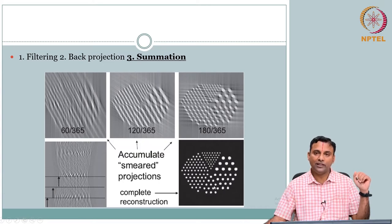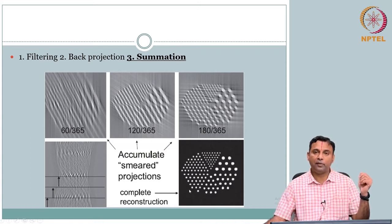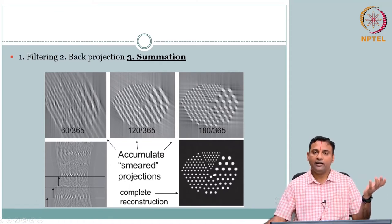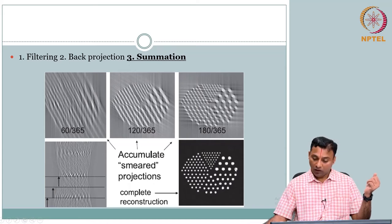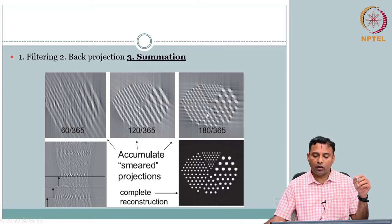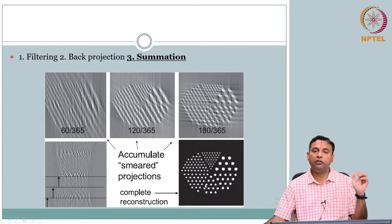Now compare this image — go back to the notes where we gave the template image and look at the contrast. When we did back projection without filtering, it was blurry. But this result is pretty damn close to the original object — this is fantastic. Each back projection contributed a little bit, and when you add all of them, you get a complete reconstruction which is very good. So this is all we covered.